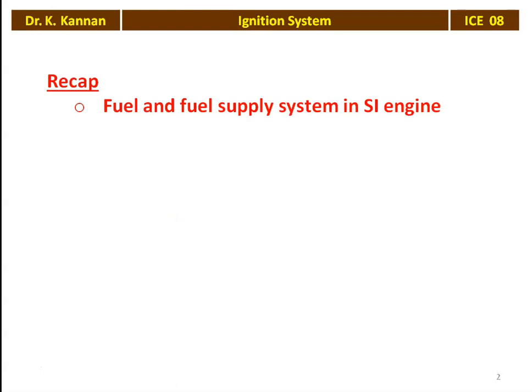We recap from the previous lecture. In the earlier lecture, we studied about the fuel and the fuel supply system in the SI engine. The main component is the carburetor, which produces the air-fuel mixture. This air-fuel mixture is supplied to the petrol engine during the suction stroke, compressed during the compression stroke, and at the end of the compression stroke, a small electrical spark is produced using the spark plug, which is important for combustion of the fuel. The electric energy for producing the spark is given by the ignition system in the SI engine or petrol engine.